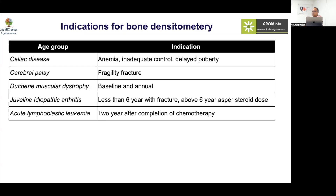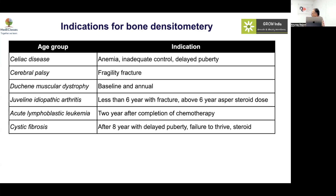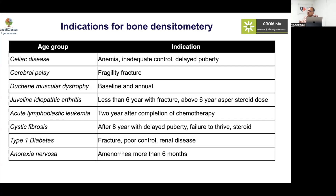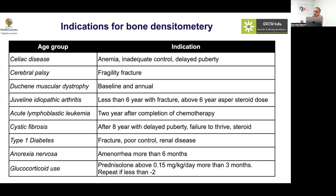In cystic fibrosis, after eight years of age, if steroid treatment is ongoing or there is failure to thrive, you should consider BMD. For type 1 diabetes, we don't routinely do it, but if there is a fracture, you have to think of bone density. In anorexia nervosa, bone mass is less, and if amenorrhea is more than six months, one should do a scan. For low corticosteroid use — prednisone above 0.15 mg/kg for more than three months — then follow up.